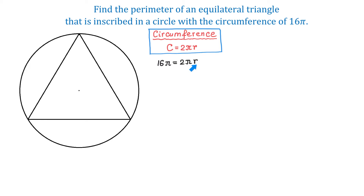To find r, we will divide both sides by 2 pi. On the right side, 2 pi and 2 pi will cancel, and on the left side, 16 pi divided by 2 pi is 8. So 8 equals r. We just found the radius of this circle, and the radius is 8 units.